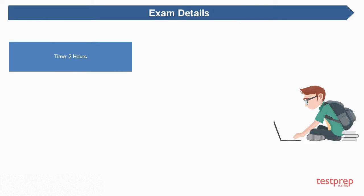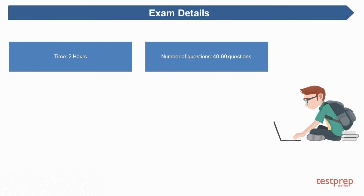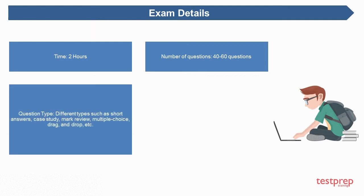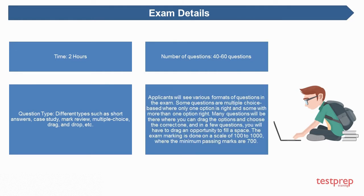Exam details: The time allotted is 2 hours, with 40 to 60 questions. Question types include short answers, case study, mark review, multiple choice, drag and drop, and more. Applicants will see various formats — some multiple choice questions have one correct option, some have more than one. Many questions involve dragging options to choose the correct one, or dragging an answer to fill a space. The exam is scored on a scale of 100 to 1000, with a minimum passing score of 700.